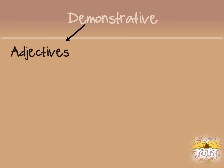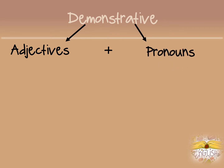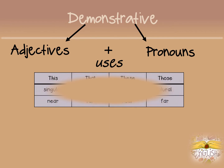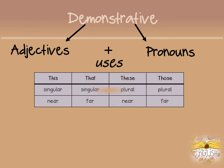Demonstrative adjectives and demonstrative pronouns both use the same four words: this, that, these, and those. This and that we use with singular nouns; these and those with plural nouns. This and these show something that's near; that and those show something that's far.